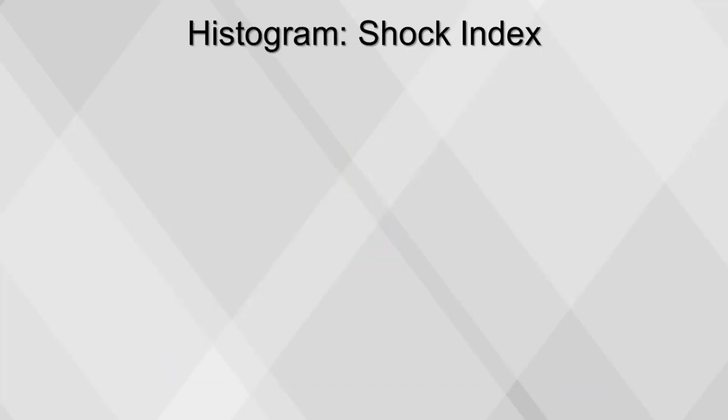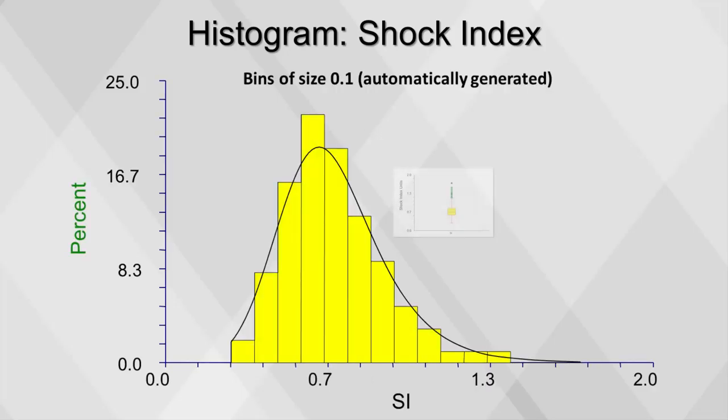We can look at the same shock index data with a histogram. The dots in the box plot showed us that there were several large values greater than 1.5 times the interquartile range. The same is represented in this histogram, with the right skew.